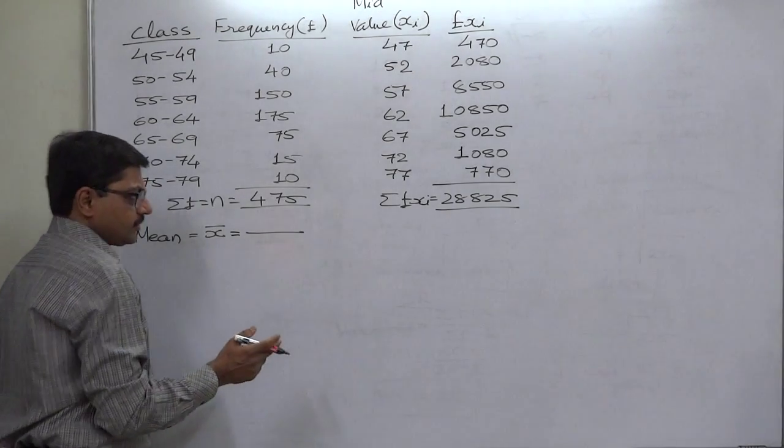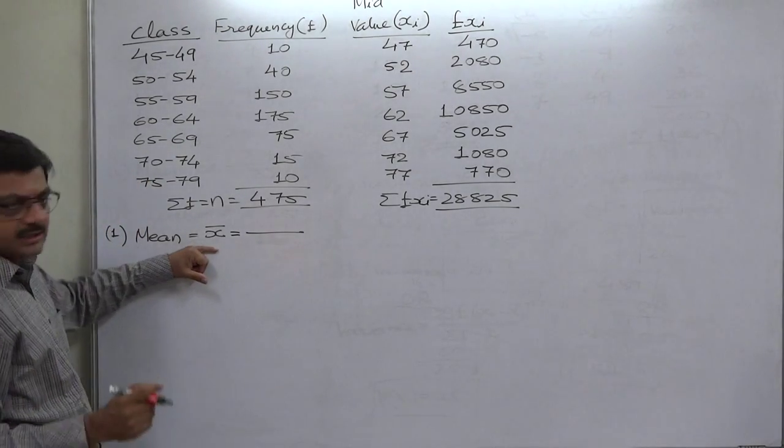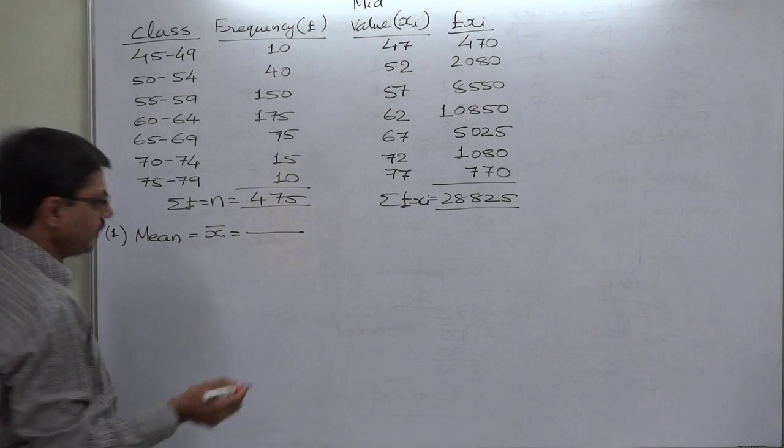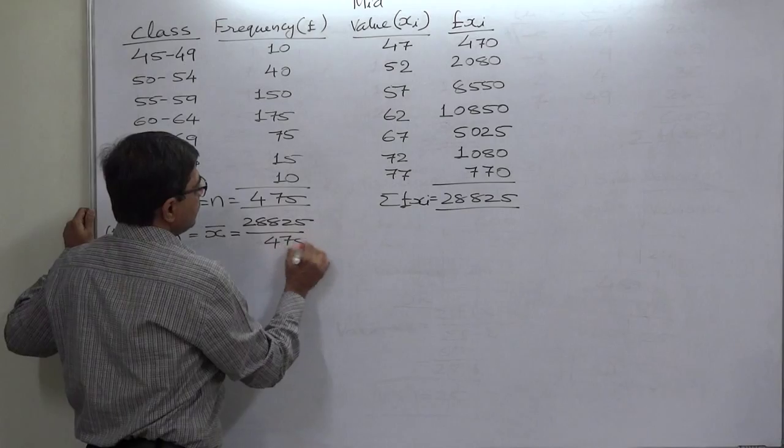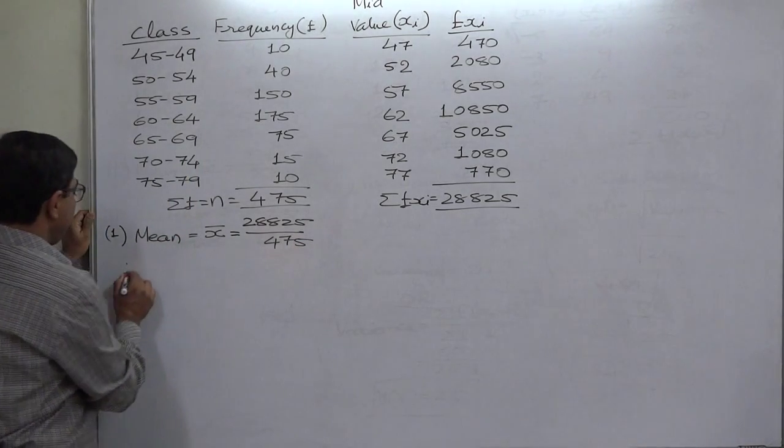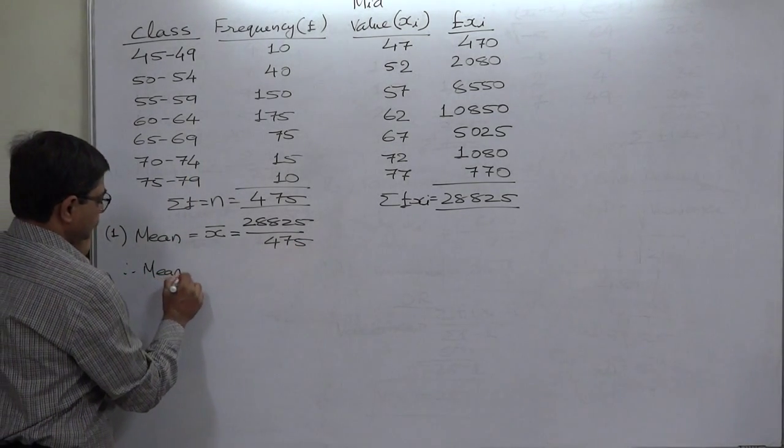There is the difference of sign only. If it is a population data, then we use sign of mu. 28,825 divided by 475.